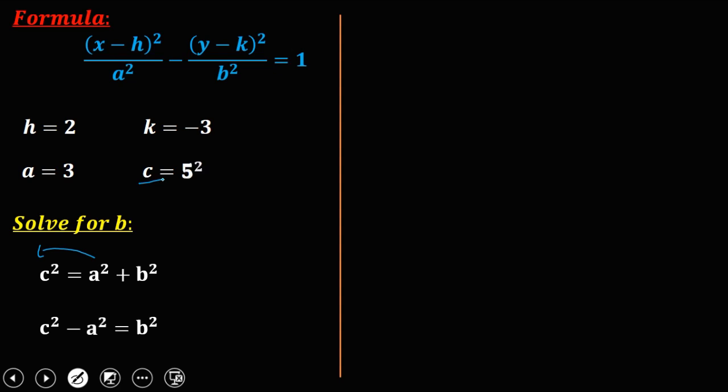Then substitute now the values. So c squared is 5 squared, then minus a squared, that's 3 squared. So 5 squared and 3 squared: 25 minus 9 equals 16. So 16 equals b squared, or b² = 16. There's no need to simplify this equation to solve for b, because in our formula, we have b squared.